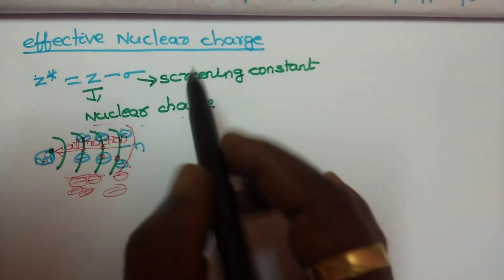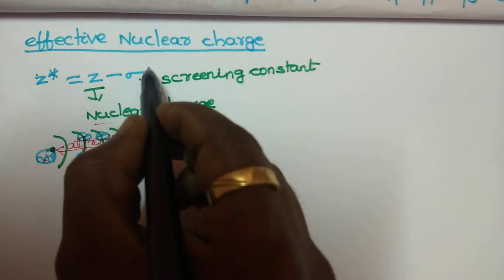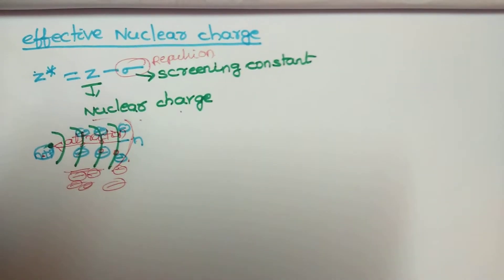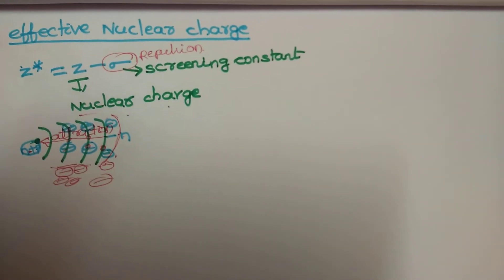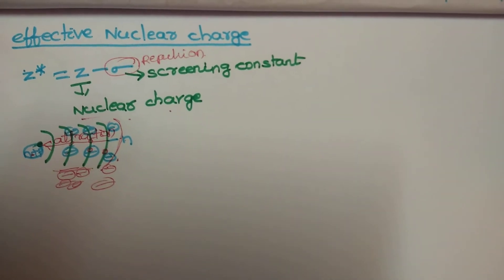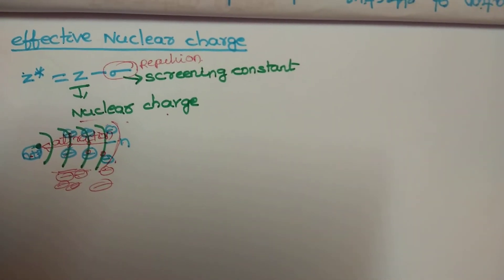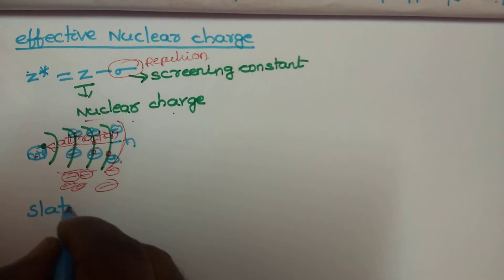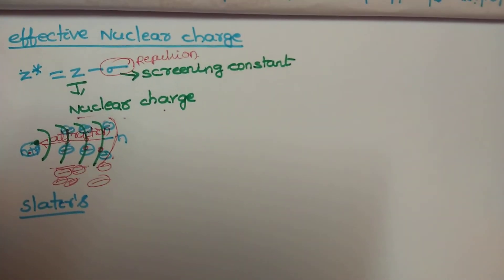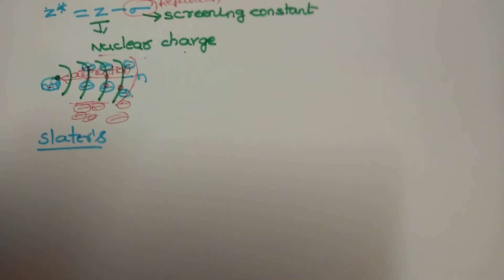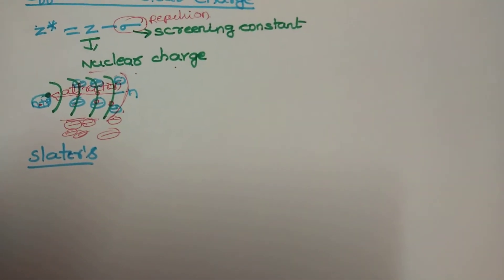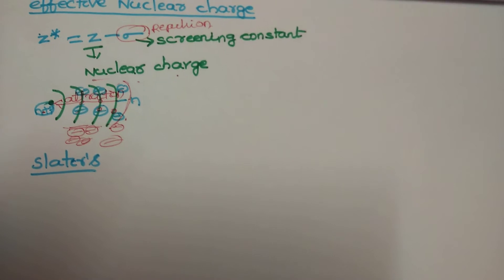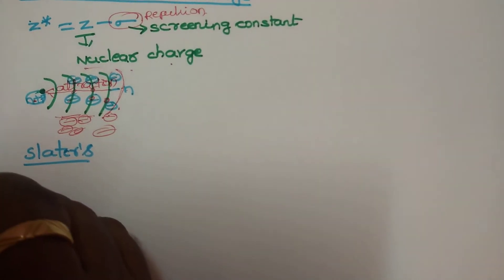To calculate effective nuclear charge: original nuclear charge minus screening constant. The screening constant tells us how much repulsion has happened — how much repulsion the electrons are showing. Some empirical formulas were proposed by the scientist Slater. Slater proposed rules to calculate the repulsion of the inner electrons.